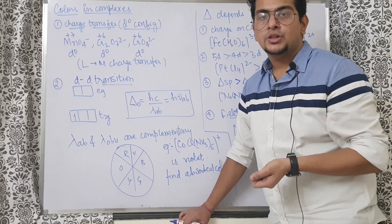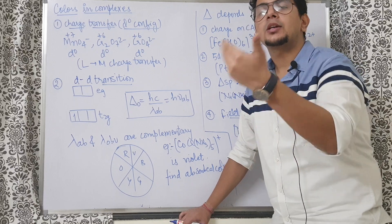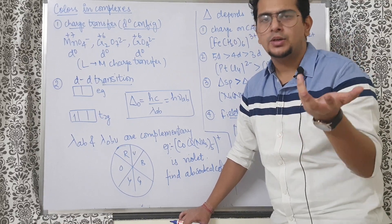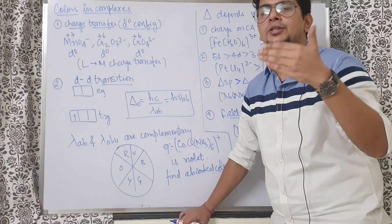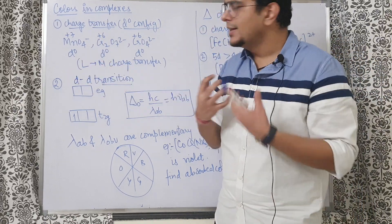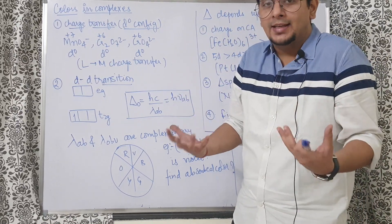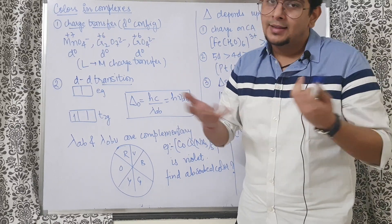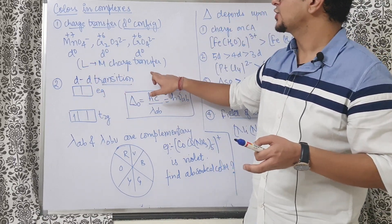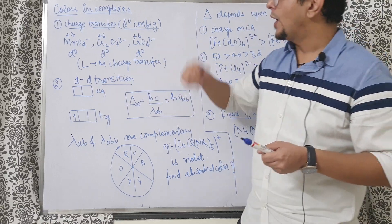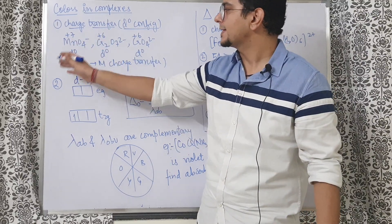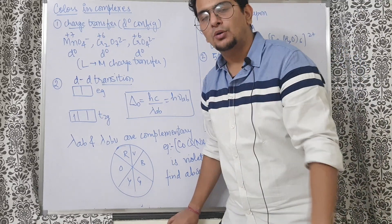Even with a d0 configuration, these compounds are colored — and that color is due to charge transfer. In chemistry, what transfers is the electron. So if the metal has a d0 configuration and has no electron to transfer, it can only accept electrons. Therefore, this charge transfer is from ligand to metal — the ligand donates an electron to the metal.